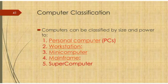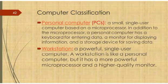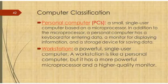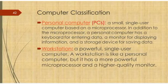Let's start with the first type: the personal computer, called a PC in short form. A personal computer is a small computer — small in size and a single-user computer, meaning it supports only one user. It is based on a microprocessor. In addition to the microprocessor, a PC has a keyboard for entering data, a monitor for displaying information after it has been processed, and a storage device for saving data.